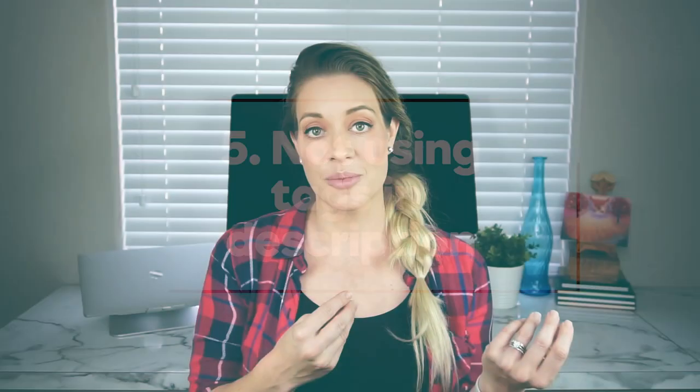Another common mistake is not using your tags or keywords in your description. A lot of people think that once they've put tags in the tag section, they're done. But you want to be a little redundant. Tags are where I start with my SEO research — I come up with all my tags first — but you don't want to leave it there. Put those tags in other places like your description and your title, so that YouTube can cross-reference what your video is about. Don't leave your description blank — weave those tags into the description box.